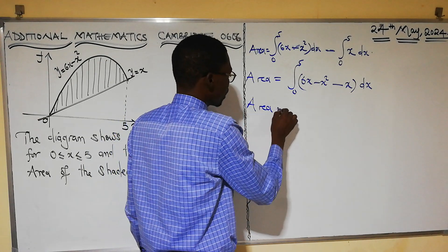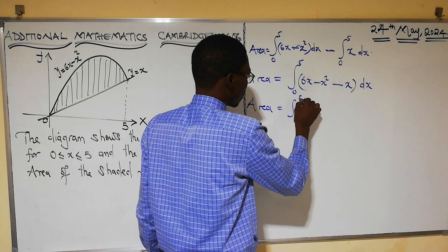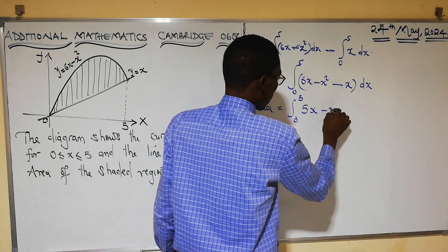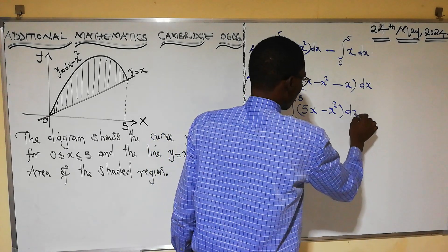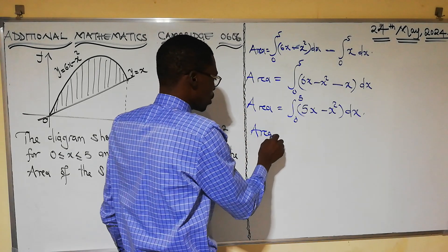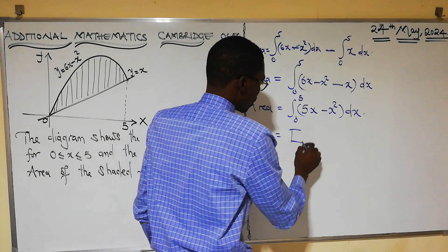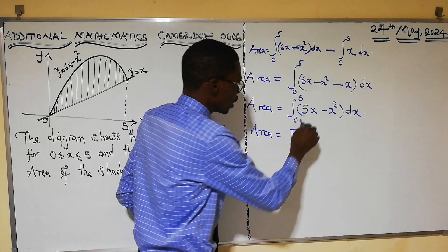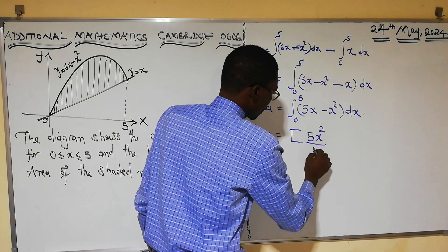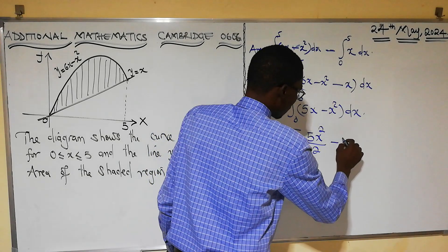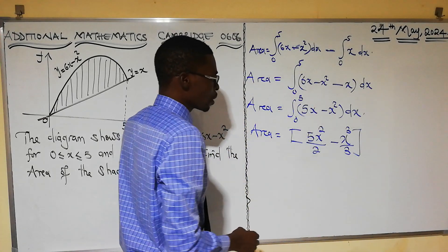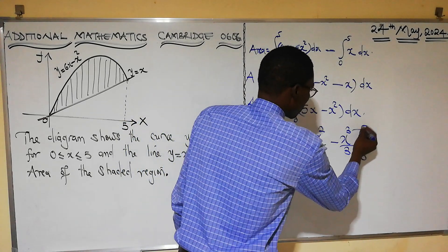So the area is going to be the integral from 0 to 5 of 6x − x minus x, which gives us 5x − x², with respect to x. Integrating, 5x gives us 5x²/2, and x² gives us x³/3. The limits of integration are from 0 to 5.